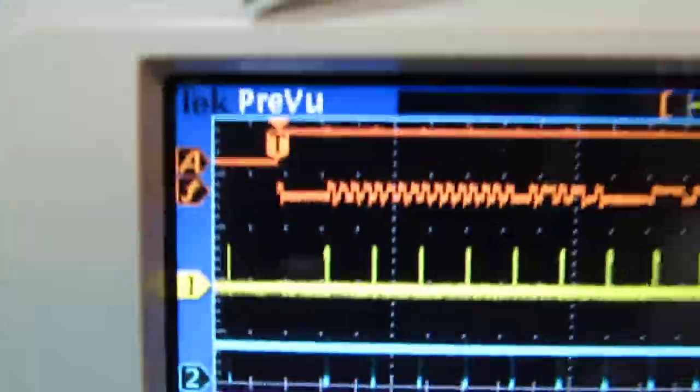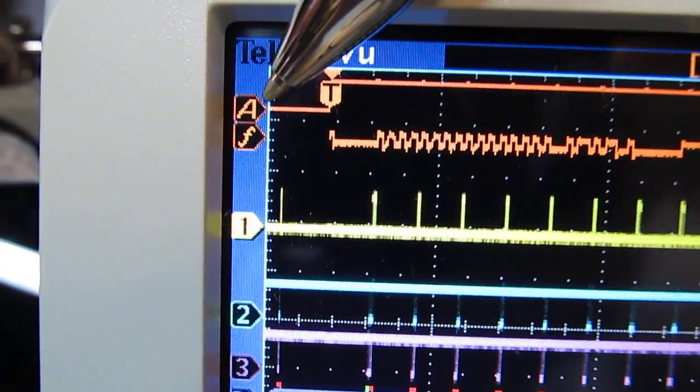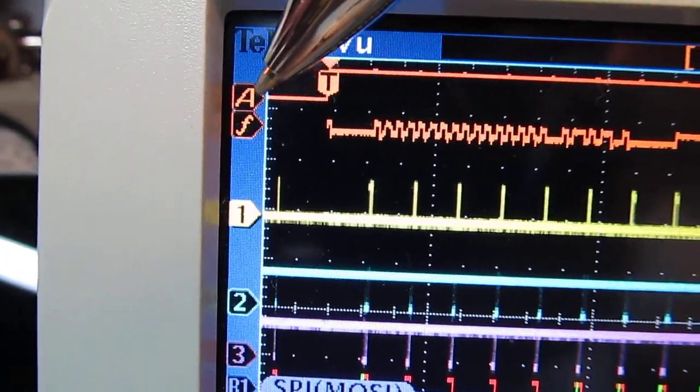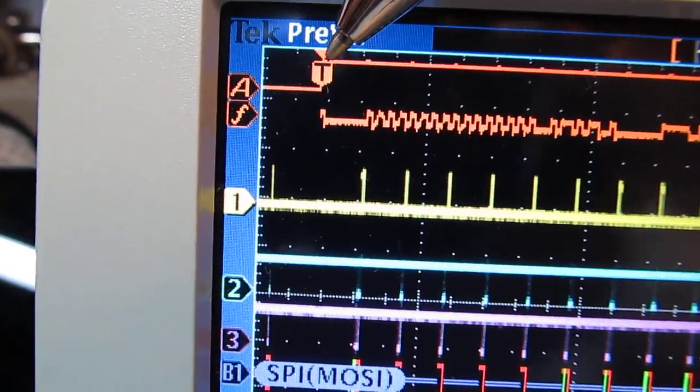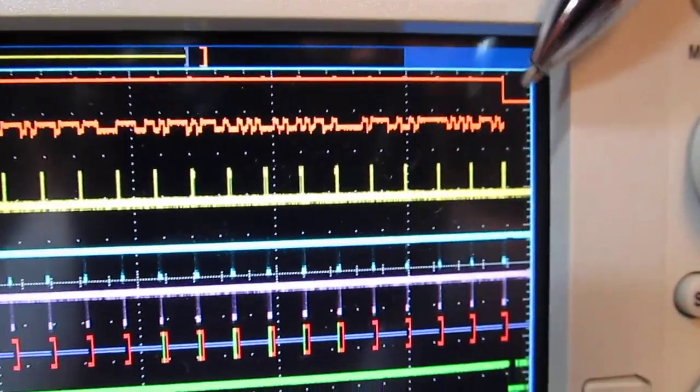So up on the top here the first trace that says the letter A here, that's the RF amplitude versus time. So this is essentially the RF amplitude coming up and then going through the transmission and then shutting off and that was captured on the spectrum analyzer input of the scope.